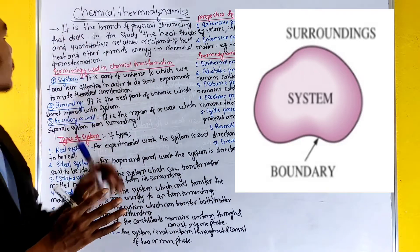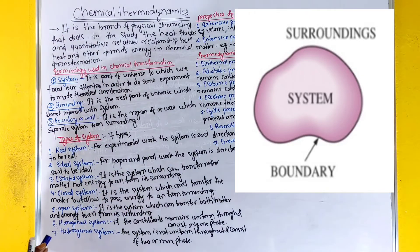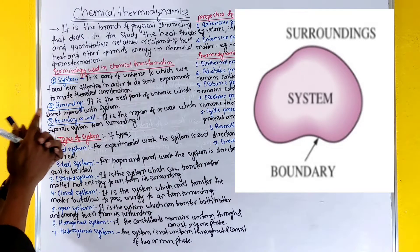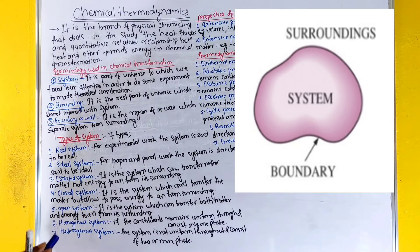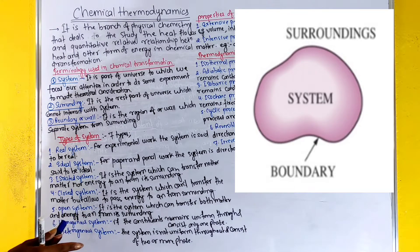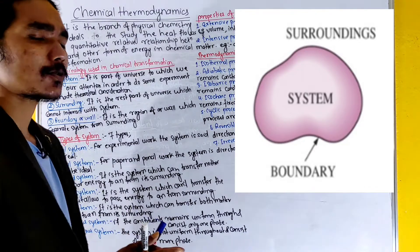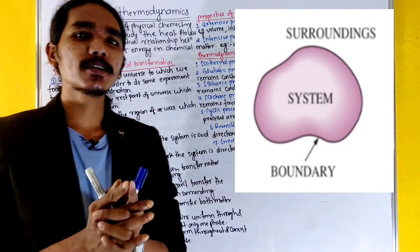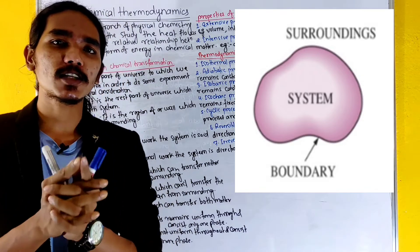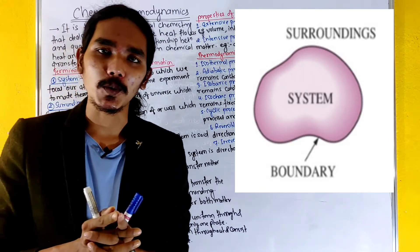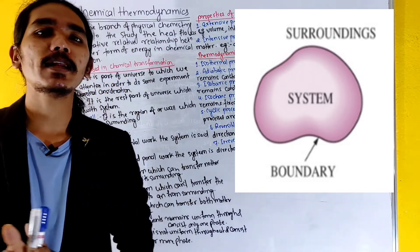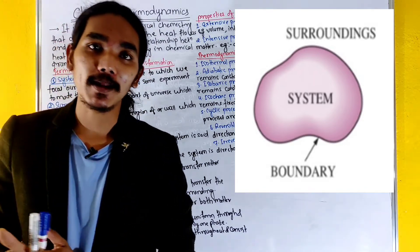Thermodynamics is the term of physical chemistry that deals with the study of heat flow and the quantitative relationship between heat and other forms of energy in chemical transformation. Chemical reactions will be applied in chemical transformation.